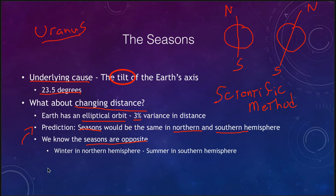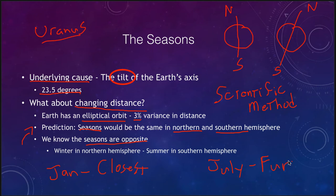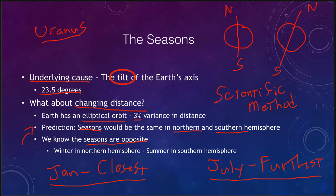In actuality, in January we are closest to the sun and in July we are furthest from the sun. For those in the northern hemisphere, this completely contradicts the distance theory — we are further away in July when it's hotter, and closer to the sun in January when it is colder. So the changing distance does not explain the seasons in the northern hemisphere.